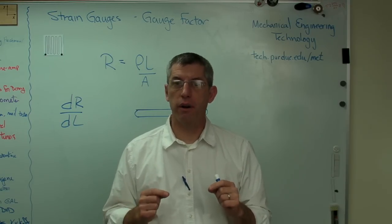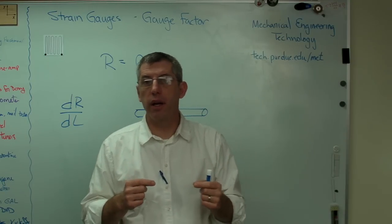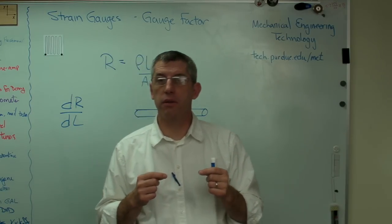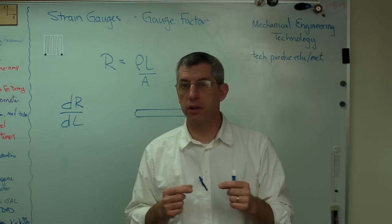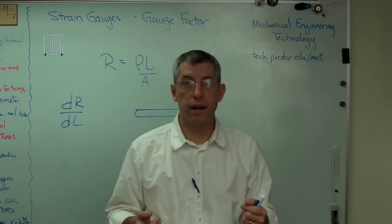It has one very, very useful property, this liquid metal strain gauge. Mercury is incompressible. Its volume never changes. There's no, because it's a liquid, we don't care about Poisson's ratio anymore. There isn't one.